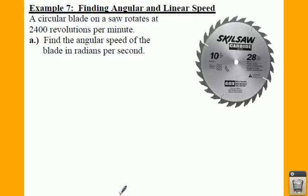So if you think about that, 2,400 revolutions per minute, that's quite a bit. We want to find the angular speed of the blade in radians per second. So if we want to find the angular speed, remember angular speed...